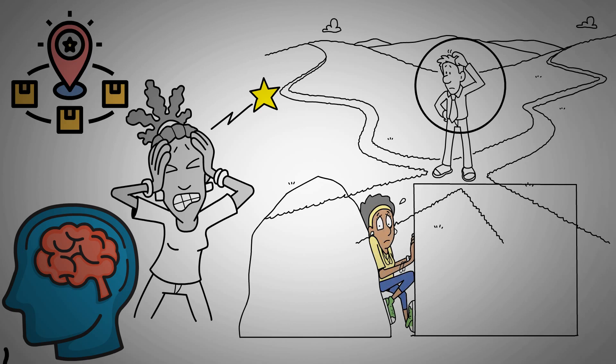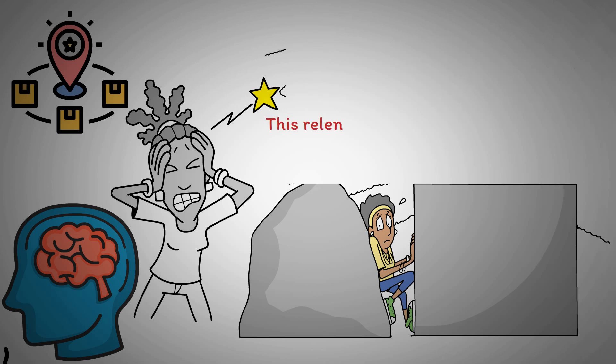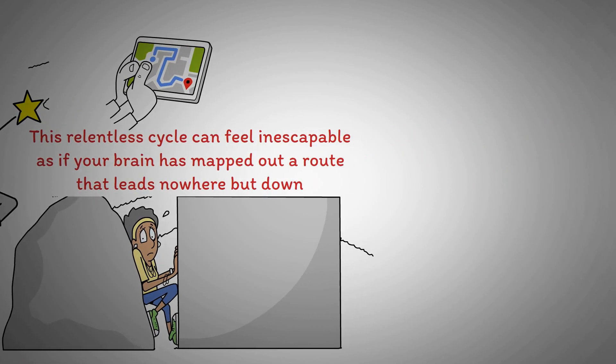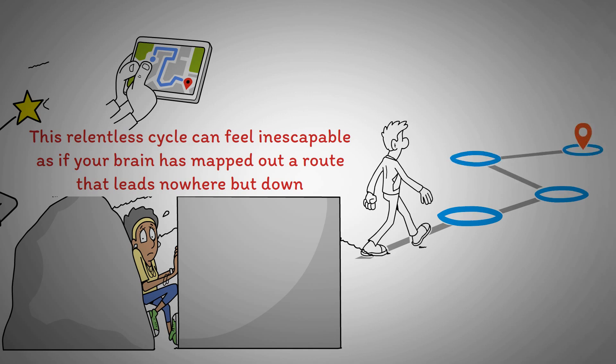It's like being trapped on a dark, endless carousel that spins you through the same gloomy scenery over and over again. This relentless cycle can feel inescapable, as if your brain has mapped out a route that leads nowhere but down. Imagine each thought as a track on a well-worn road. Every time you travel down the same road, you deepen the ruts, making it more likely you'll go down that path again. It becomes a self-fulfilling prophecy. The more you tread this path, the more entrenched it becomes, guiding your future thoughts and emotions along this familiar yet destructive route.